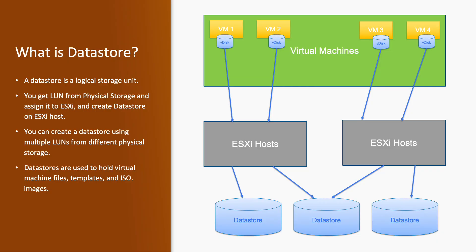A data store is a logical storage unit. You have physical storage available on the bottom layer. In that physical storage, we have a bunch of disks. Physical storage creates a LUN using that bunch of disks and assigns it to the ESXi host. An ESXi host uses those LUNs to create data stores and assigns capacity to the virtual machine in the form of a virtual disk. Whatever files a virtual machine has — such as configuration files, templates, and ISO images — get stored in the data store.